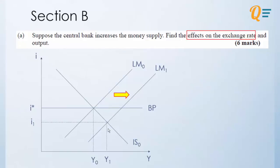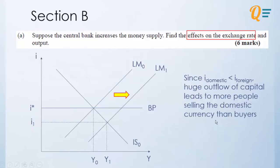So we should know that there isn't an external equilibrium. So balance of payment equilibrium is not existent. How about internal equilibrium? When we see our LM curve intersect our IS curve, we know that there is an internal equilibrium. Now since we know that the interest rates of our domestic country is lower than what is out there in the foreign exchange, huge outflow of capital leads to more people selling the domestic currency than the amount of people buying the currency.